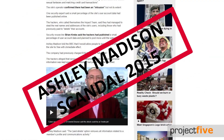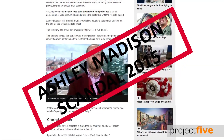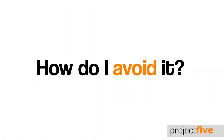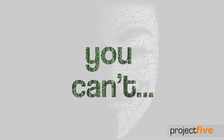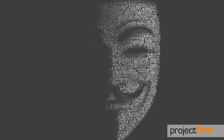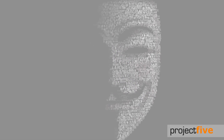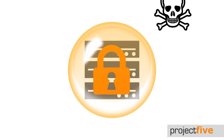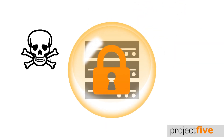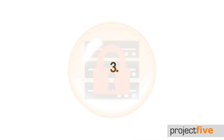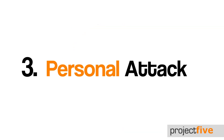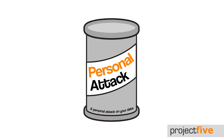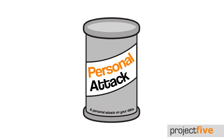The Ashley Madison attack came with the threat of exposure if the parent company didn't shut down. How do you avoid it? Unfortunately you can't — you have absolutely no control over whether or not this happens. But central systems are becoming more and more vigilant and resistant to such attacks.